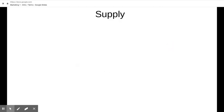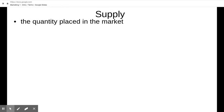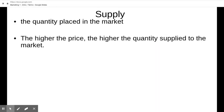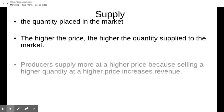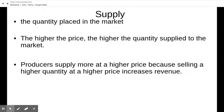Now let's talk about supply and demand. Supply is the quantity placed in the market — how much of something is out there. Producers and supply are connected to each other. The higher the price, the higher the quantity supplied to the market. If people are willing to pay $20 for an item that normally goes for $5, every business will try to make it because that's a $15 profit. Selling more items at a higher price increases revenue — that's what businesses are in business to do.